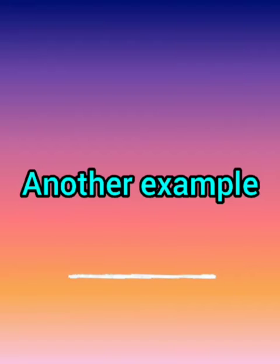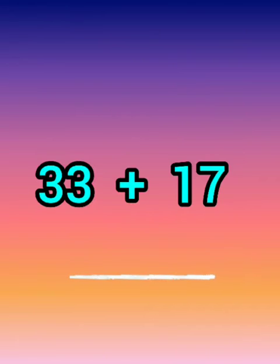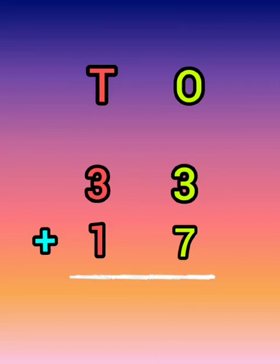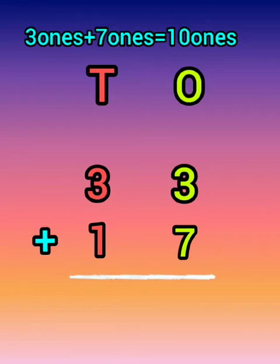33 plus 17, step 1. Add the ones: 3 ones plus 7 ones is equal to 10 ones.